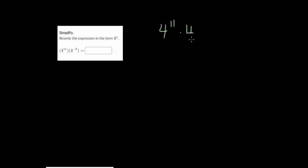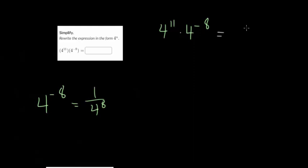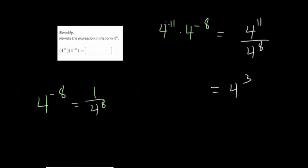This one is pretty similar. We have 4 to the 11th times 4 to the minus 8. We know that 4 to the minus 8 is just divide by 4 eight times, or 1 over 4 to the 8th. So we could rewrite this as 4 to the 11th over 4 to the 8th. You'd have 11 fours up top multiplied together and 8 down below — 8 of them cancel out, and you end up with 4 to the 3rd. Adding the exponents: 11 plus negative 8 equals positive 3.